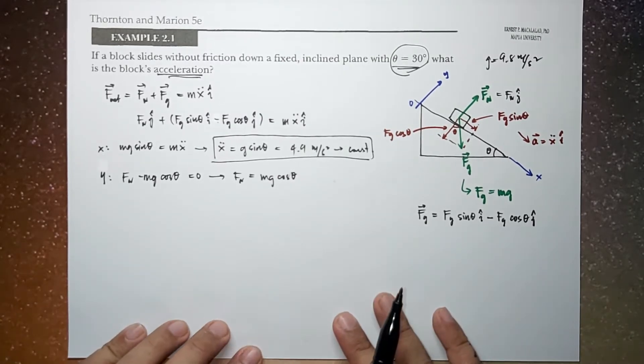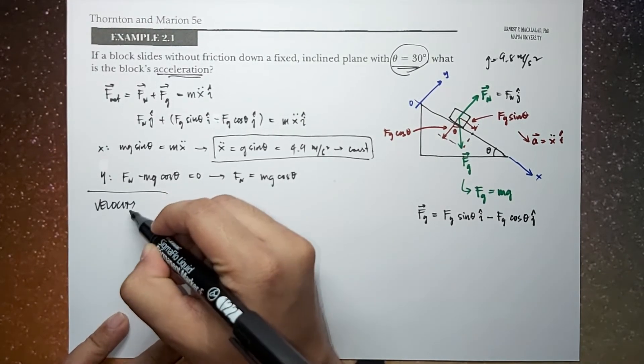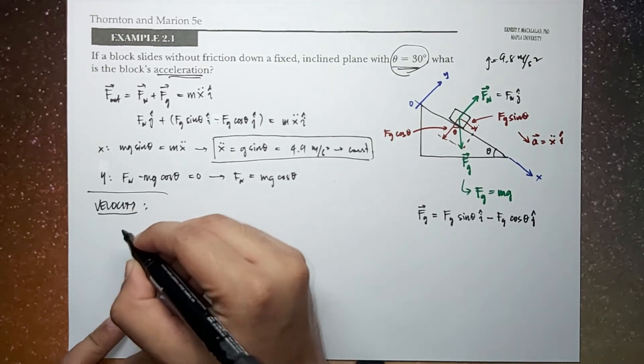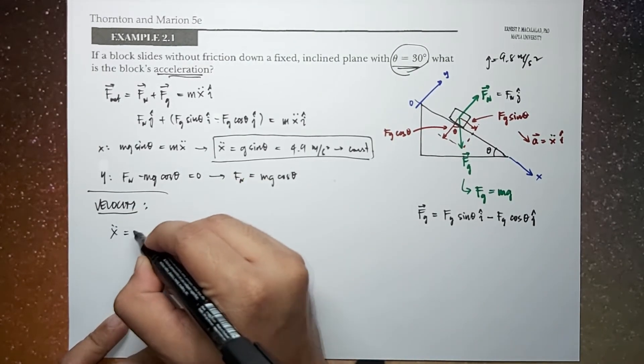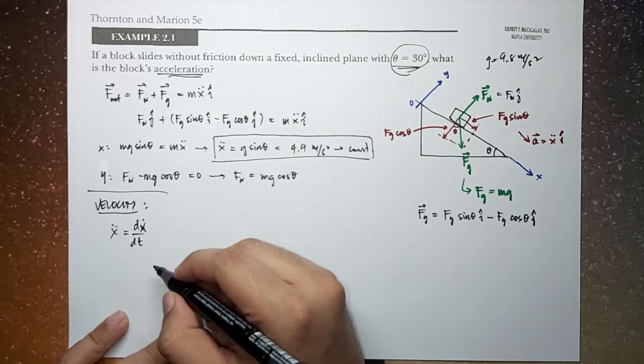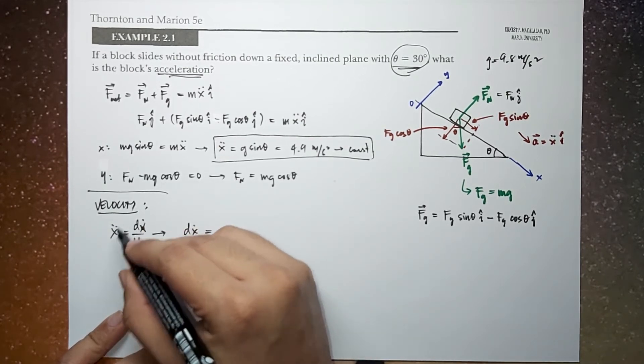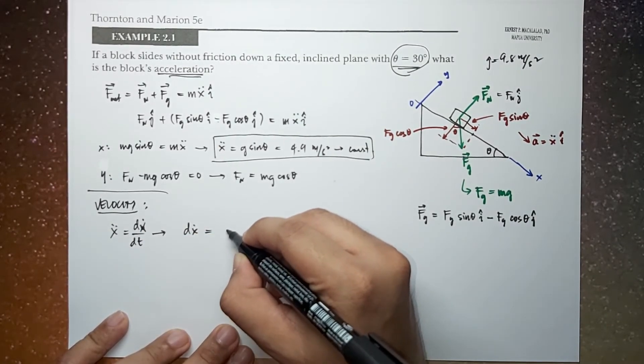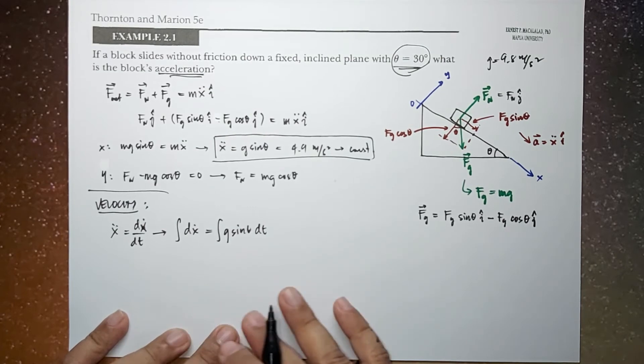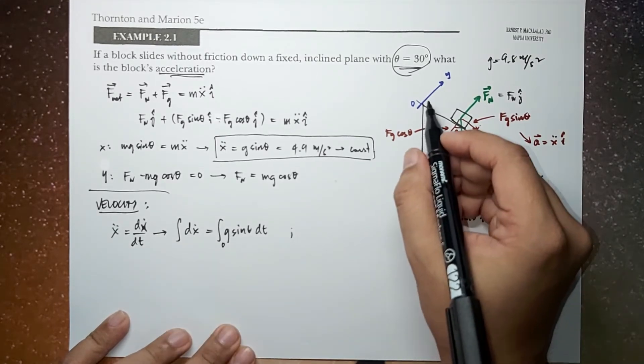Now we can explore more about this by getting the velocity and position of this object as time progresses. So we can do this by integration. And by integrating, x double dot is actually the derivative of v or x dot as a function of time. So this means that we can calculate the velocity by just setting up the integral here. So this becomes g sin theta dt, then integrating, setting the initial condition that at time equal to 0,